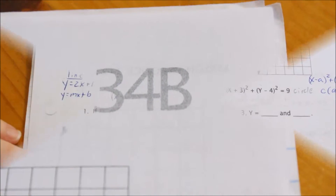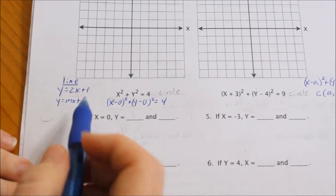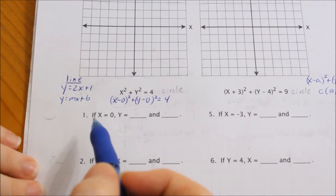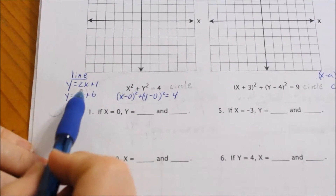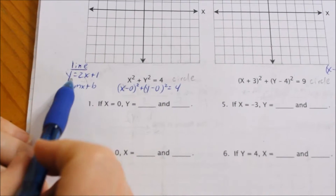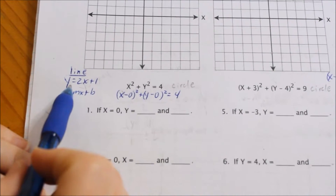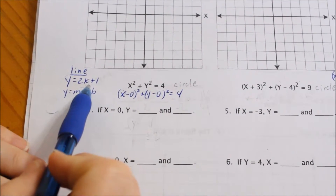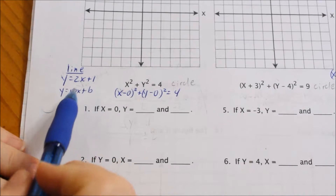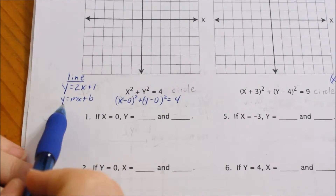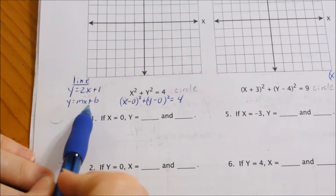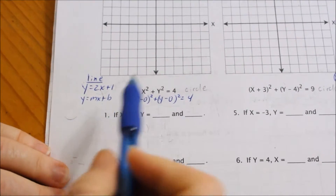We are on 34b. We're going to be graphing circles and ellipses today. You have already graphed a line, like the equation y equals 2x plus 1. Remember, the general equation of a line is y equals mx plus b. You've learned how to graph that.